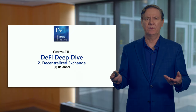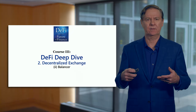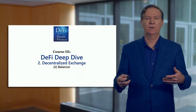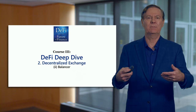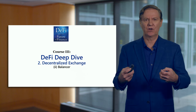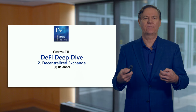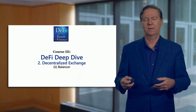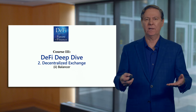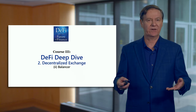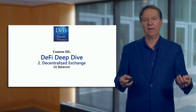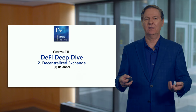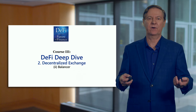With Uniswap you've got a pair, and when you supply you supply the same dollar amount for both sides. That's how Uniswap works — it uses a very simple formula in version two where we've got x times y equals k, and k is the invariant. X is the number of tokens for asset x, and y is the number of tokens for asset y.